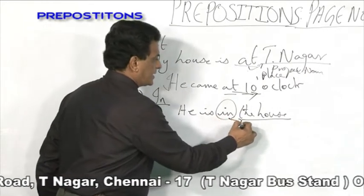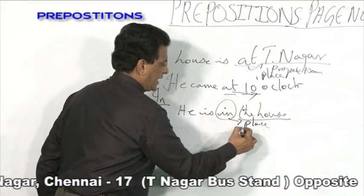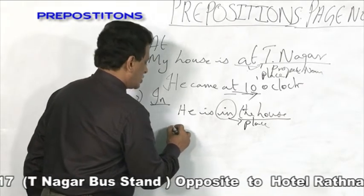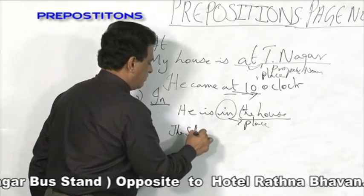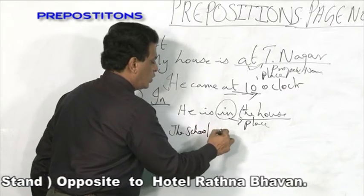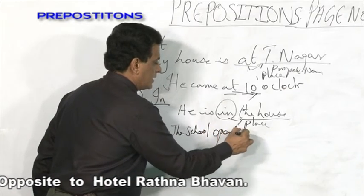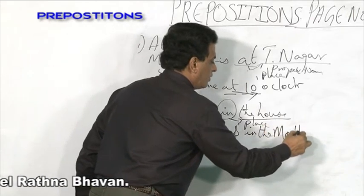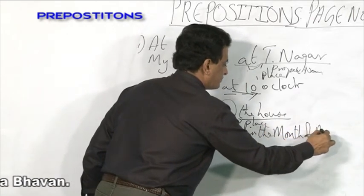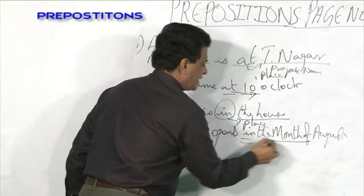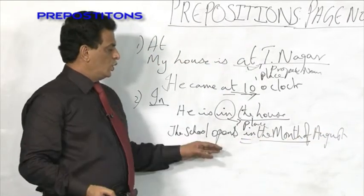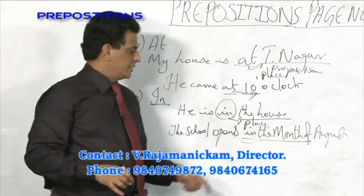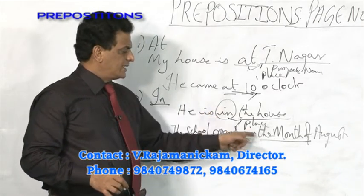'In' is used with place and also with time. The school opens in the month of August. 'In' is used with the month. 'School opens the month of August' does not give any meaning. If you add only 'in', it gives the meaning. So 'in' is used with both place and time.